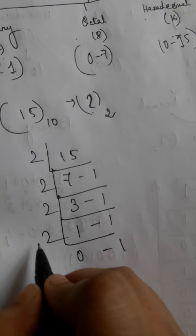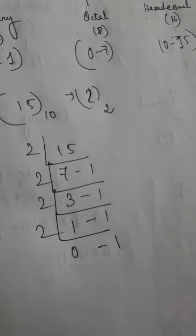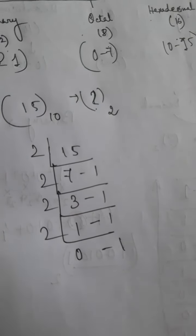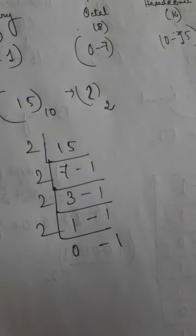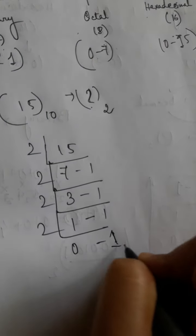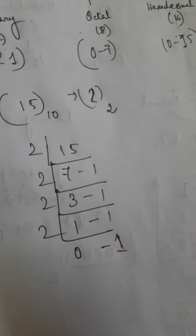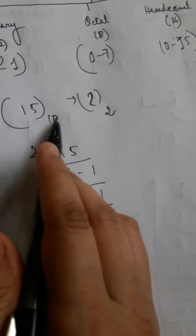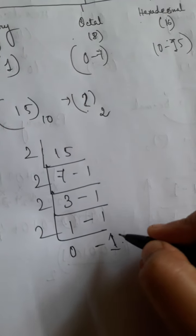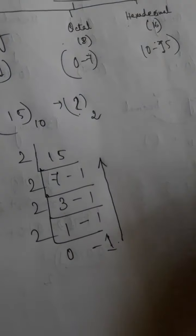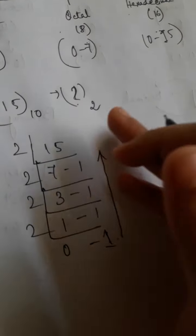Why? Because 1 is smaller than 2. Whenever we divide a smaller number by a bigger number, our quotient will always be 0 and the number will be considered as remainder. So this is the binary equivalent of 15 decimal. Now you will gather the remainder part from down to up or bottom to top.